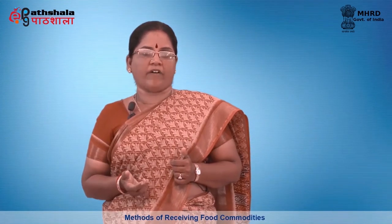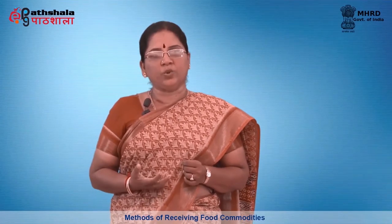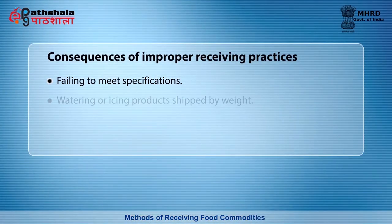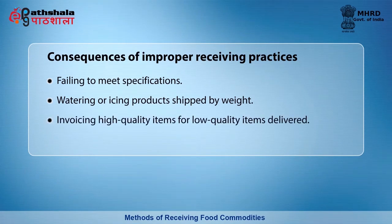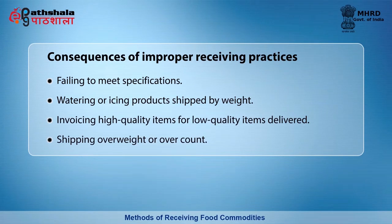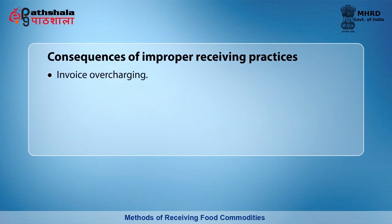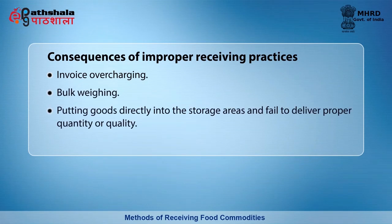The consequences of improper receiving practices: there are various methods suppliers or delivery drivers can use to defraud a food service institution when control procedures for receiving are not being used. These include failing to meet specifications, watering or icing products shipped by weight, invoicing high-quality items for low-quality items delivered, shipping overweight or over count, invoice overcharging, bulk weighing, and putting goods directly into the storage areas while failing to deliver proper quantity or quality.